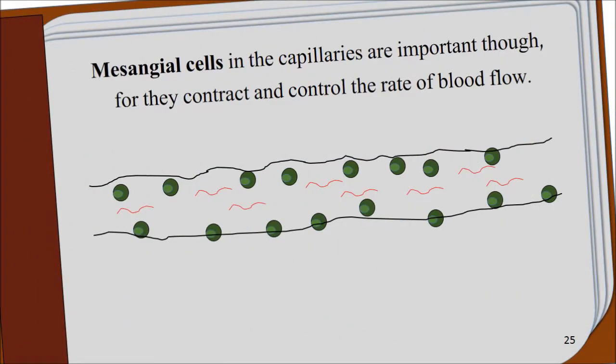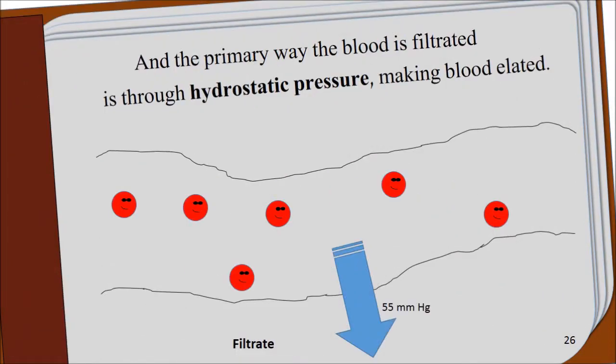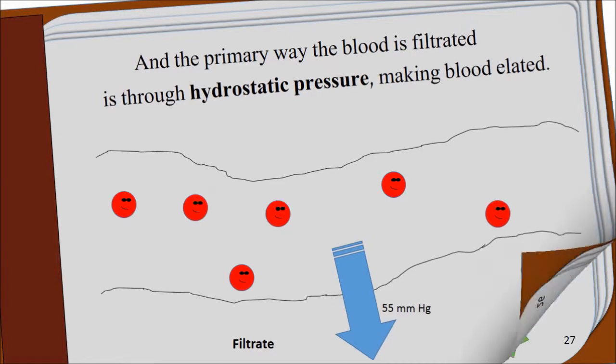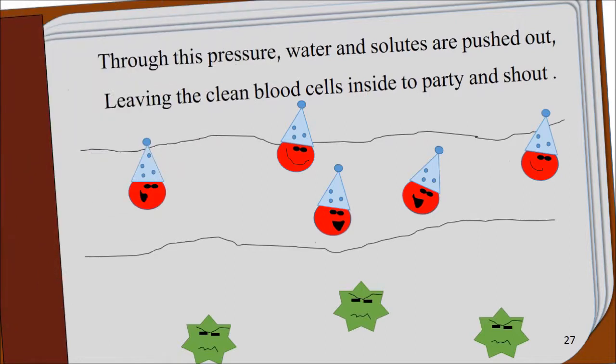Mesangial cells in the capillaries are important, though, for they contract and control the rate of blood flow. And the primary way the blood is filtrated is through hydrostatic pressure, making blood elated. Through this pressure, water and solutes are pushed out, leaving clean blood cells inside to party and shout.